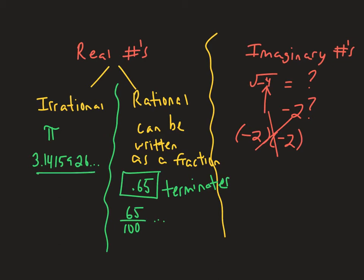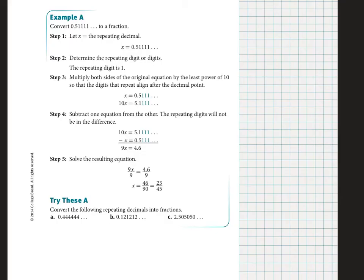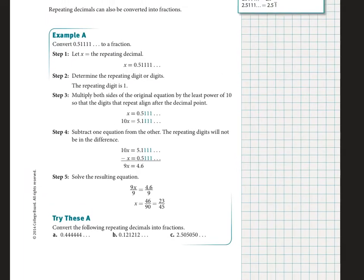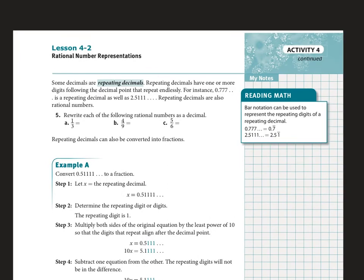Numbers that do not terminate and do not have a repeating pattern cannot be written as fractions, so therefore they're irrational. So let's get into some of the examples here.